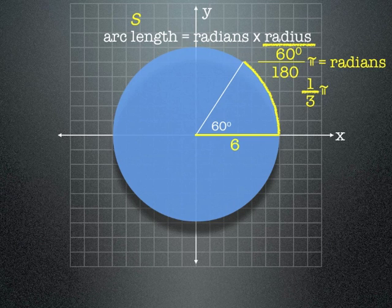So it's 1 third pi times the radius, which is 6, which is 2 pi.